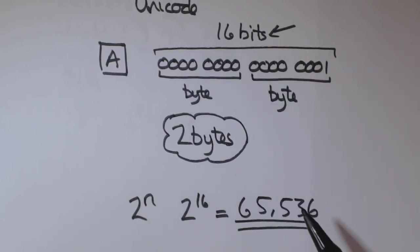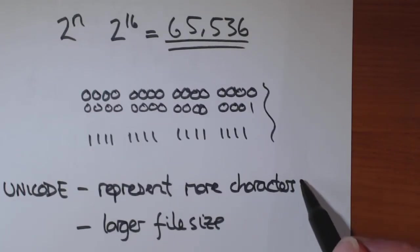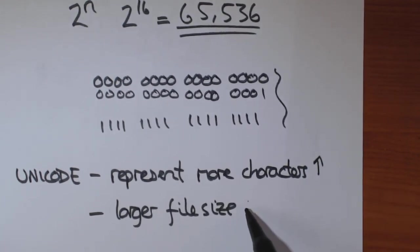Because we're using 16 bits per character. That's good because you can represent more characters. So, that's a plus. But, the downside is, it's a larger file size.